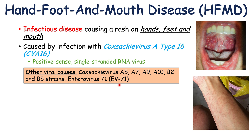Enterovirus 71, or EV71, is an important virus to point out because it can cause a more severe illness. We're going to talk about some of the complications and severe symptoms this virus can cause. Enterovirus 71 seems to be more common in Asian countries, and it's also important to note that patients can be infected with multiple of these viruses at the same time.